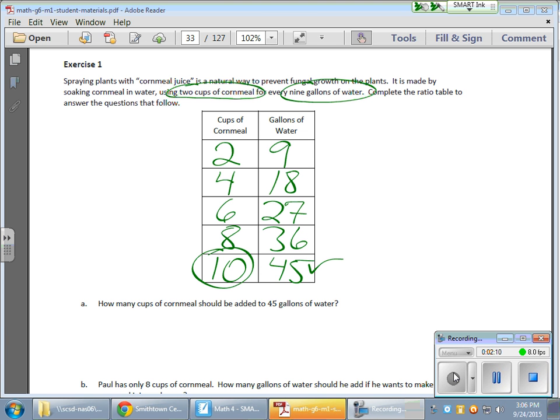So if he only has eight, okay, that means he's going to use all 36 gallons of water. So if he only has eight cups of cornmeal, he's going to need to use all 36 gallons of water to maximize the amount of cornmeal juice he can make.